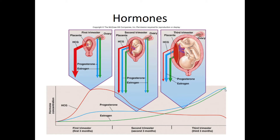Progesterone actually prevents labor by reducing uterine contractility. We take advantage of this clinically — women prone to premature labor are given progesterone to help prevent it. So estrogen ramps up toward labor while progesterone tamps that down.